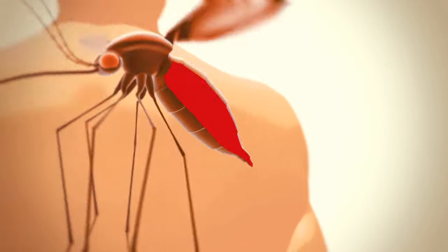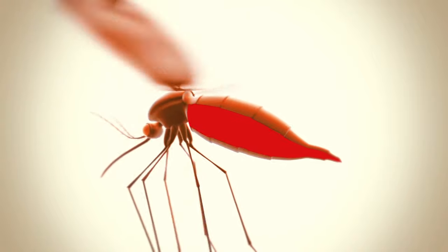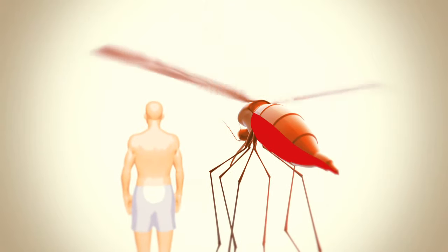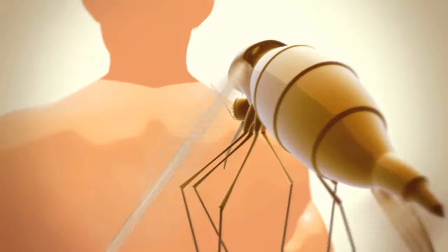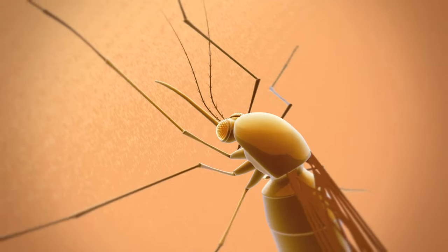Inside the mosquito, the gametocytes develop into new sporozoites. So now the human has infected the mosquito, the life cycle comes full circle and continues.